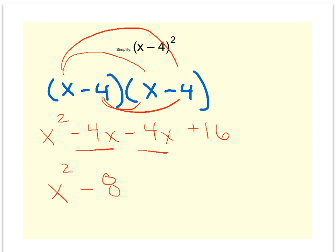We have like terms to combine, negative 4x plus a negative 4x is a negative 8x, plus 16. So this would be our answer for simplify the quantity of x minus 4 squared.